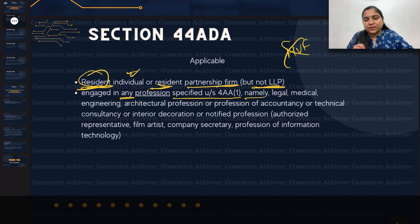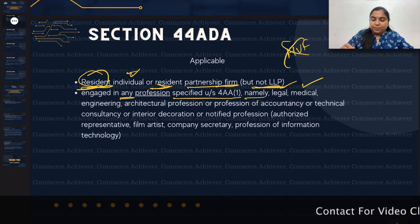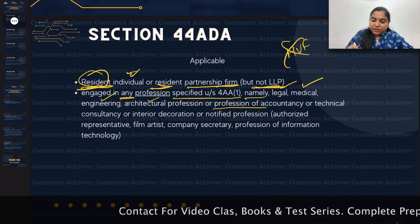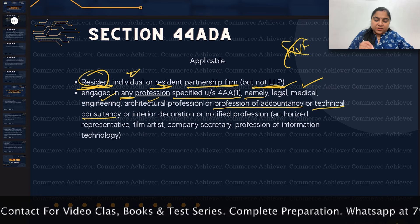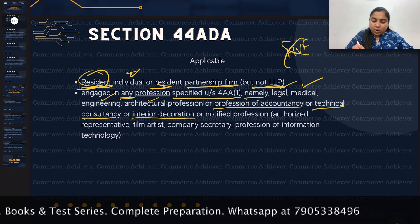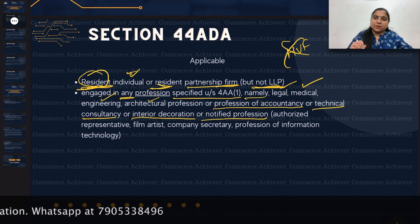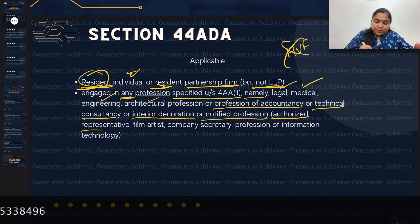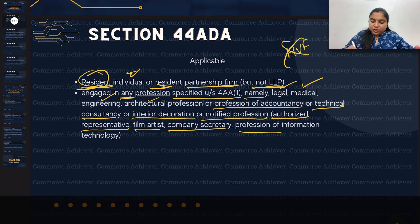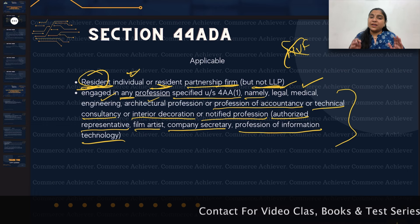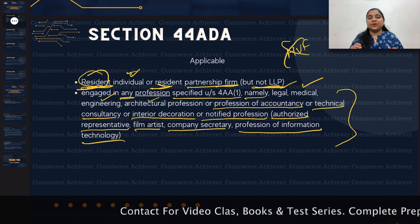The name is also mentioned. Let's see: Legal work, Medical, Engineering, Architectural profession, Profession of Accountancy, Technical Consultancy, Interior Decoration, or Notified Profession. Notified professions are notified by the CBDT from time to time — currently these include Authorized Representative, Film Artist, Company Secretary, and Profession of Information Technology. This is the current specified list; if there is any amendment or update, I will definitely share it with you.